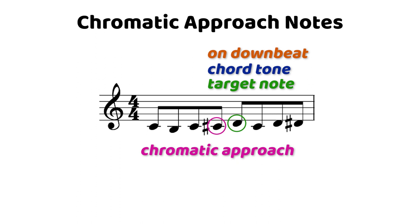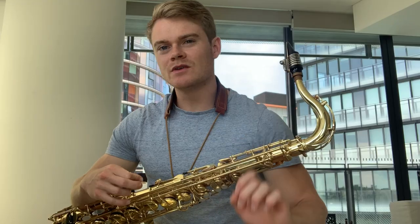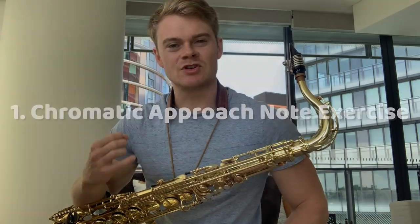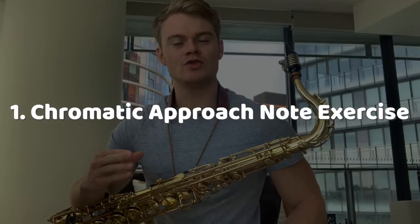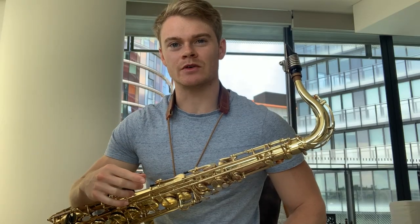That is beat one or beat three. Often, chromatic approach notes are just one chromatic note in between two diatonic notes, but they can also be a series of chromatic notes that lead either up or down by half step to a target note. Here is an exercise that demonstrates how you can implement chromatic approach notes between scale degrees.